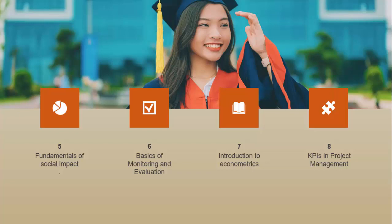The seventh course is introduction to econometrics. Econometrics is basically a mathematical way of forecasting — using mathematics, you can tell how the future would be. It's very good especially in target setting, because when you have the right statistics, you can set realistic targets mathematically. This is why it's a good course, and it's also good for an M&E officer to know what econometrics is all about.